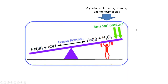Some experimental studies indicate that hydroxyl radicals from Amadori products are produced by the Fenton reaction in the presence of transition metal ions such as iron, leading to the formation of carboxymethyl compounds.